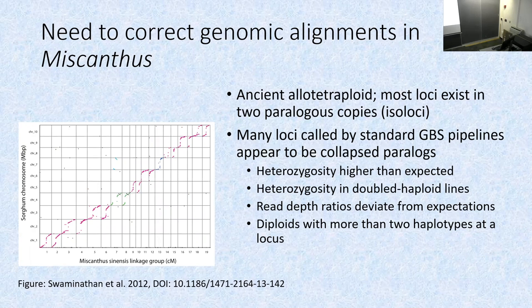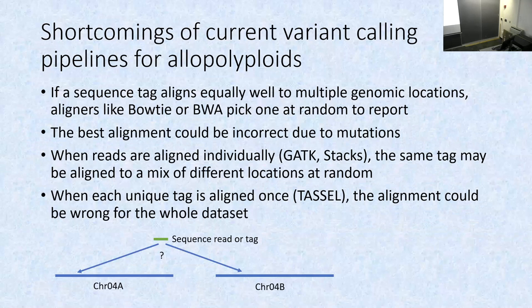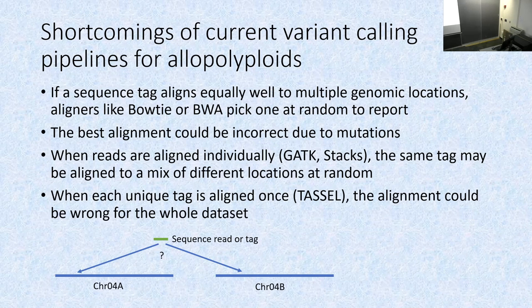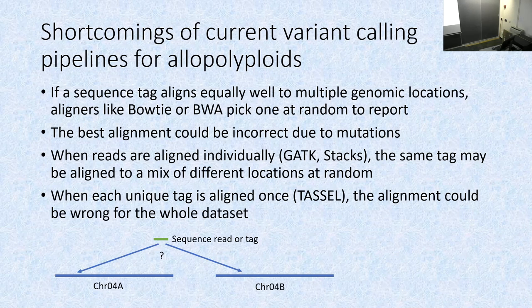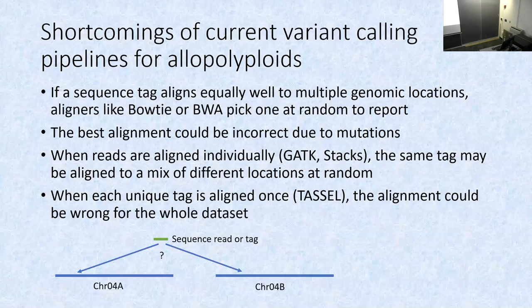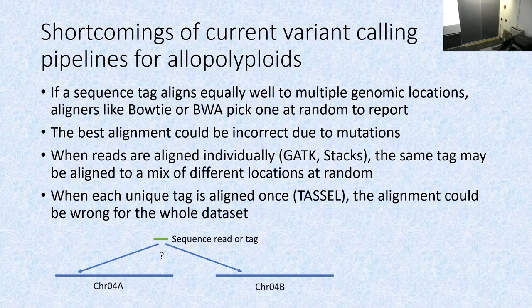Part of the problem is that aligners like Bowtie or BWA, originally designed with the human genome in mind, return just the best alignment. The best alignment may not be the correct one, and if there are two equally good alignments, one is picked at random — but if I know I have two paralogues, I don't want to randomly pick one. For pipelines like GATK and Stacks, reads from the same tag might be aligned to a mix of locations. With TASSEL-GBS, each tag is aligned once and if that's wrong, the whole dataset is wrong.